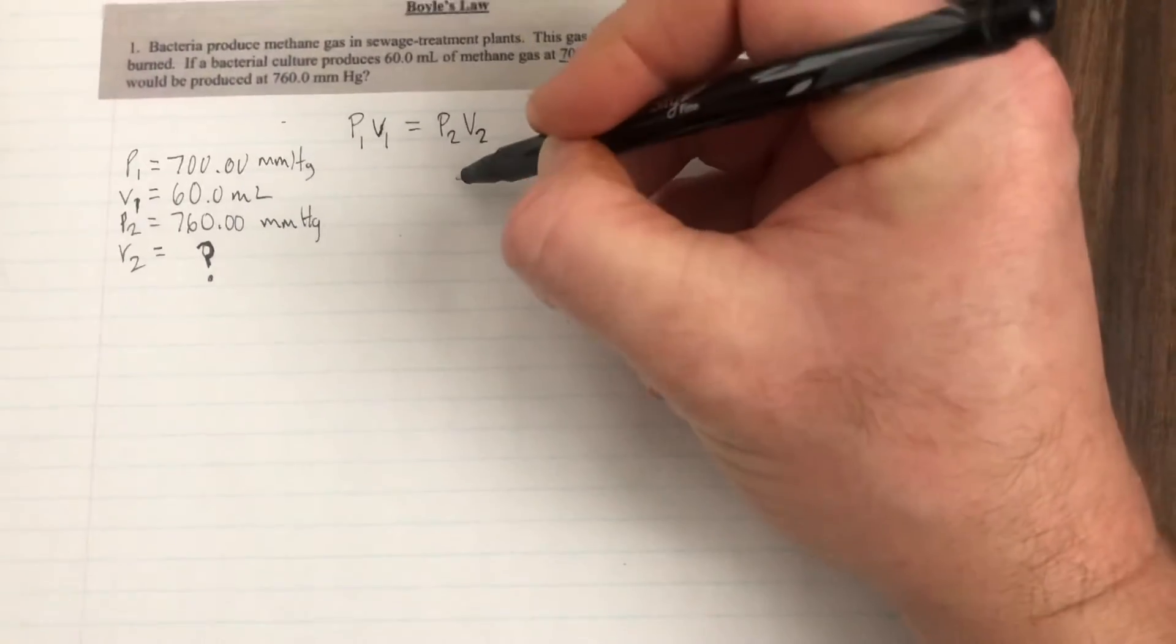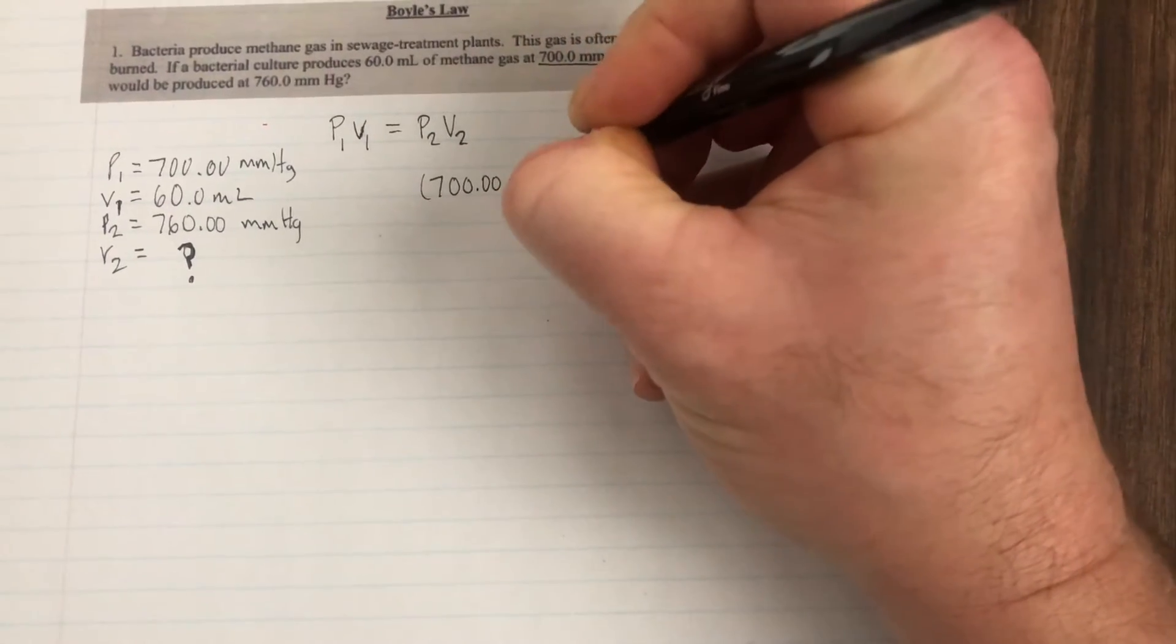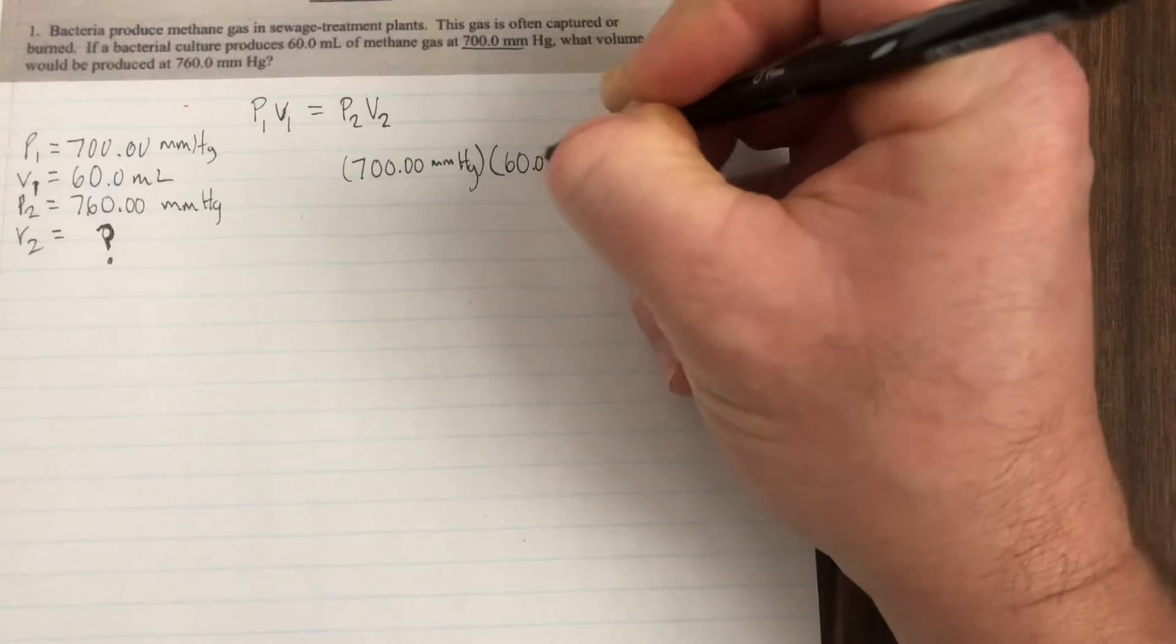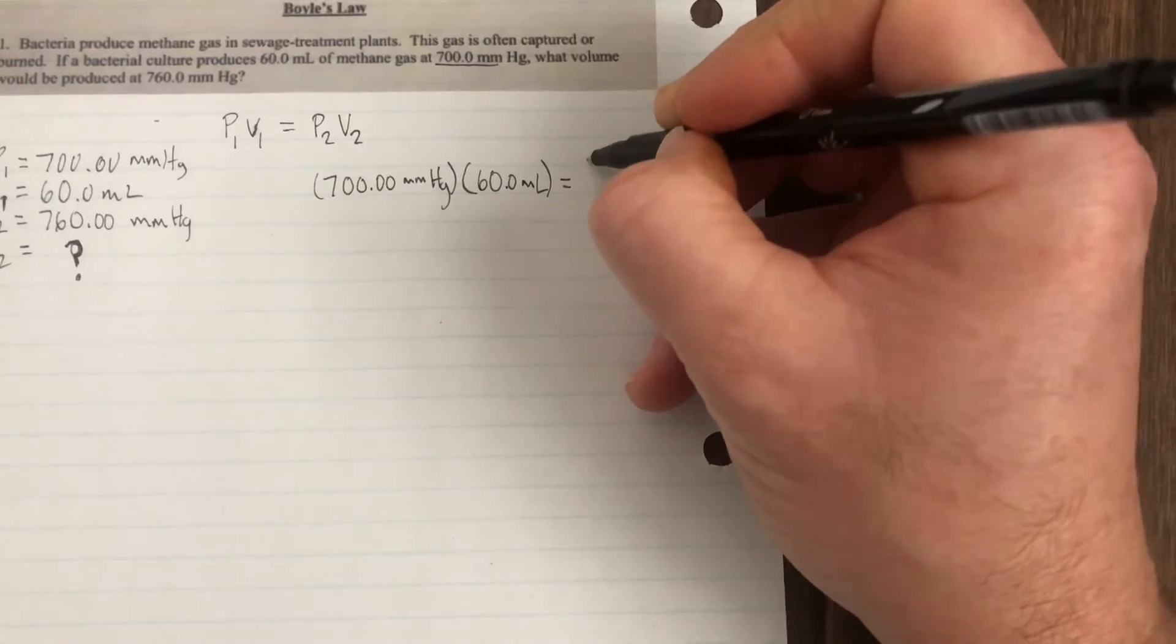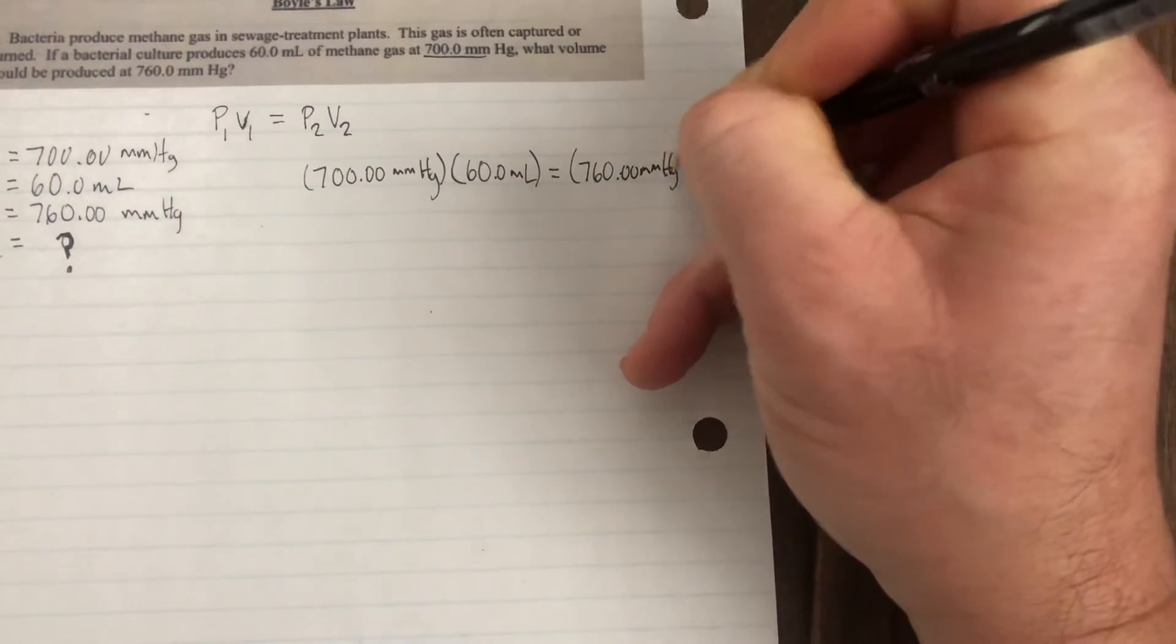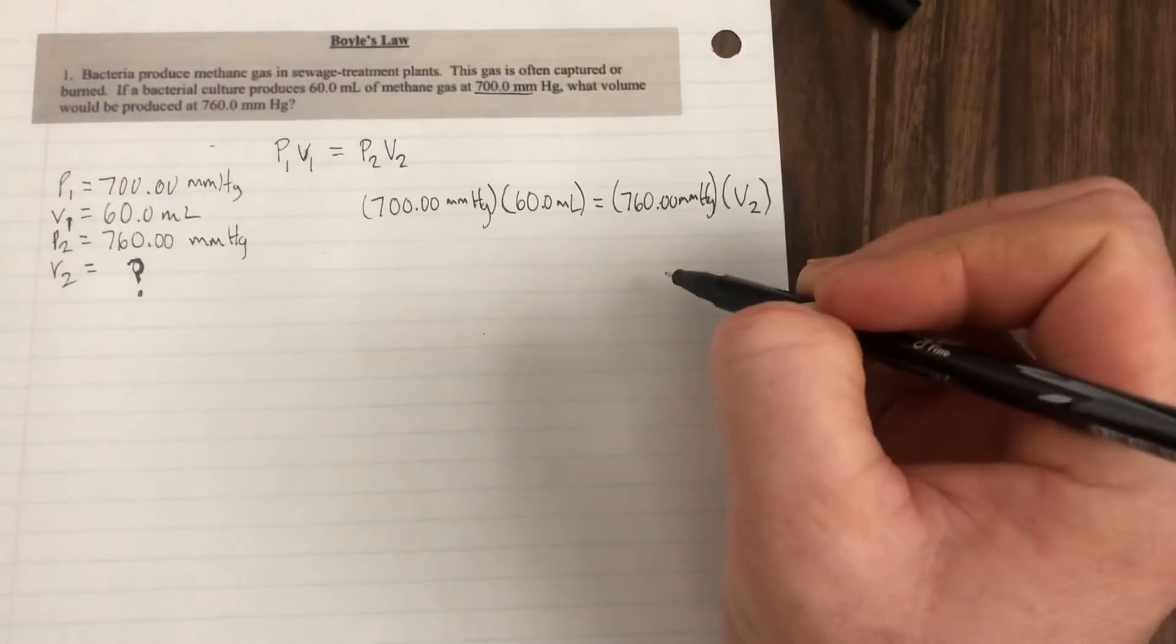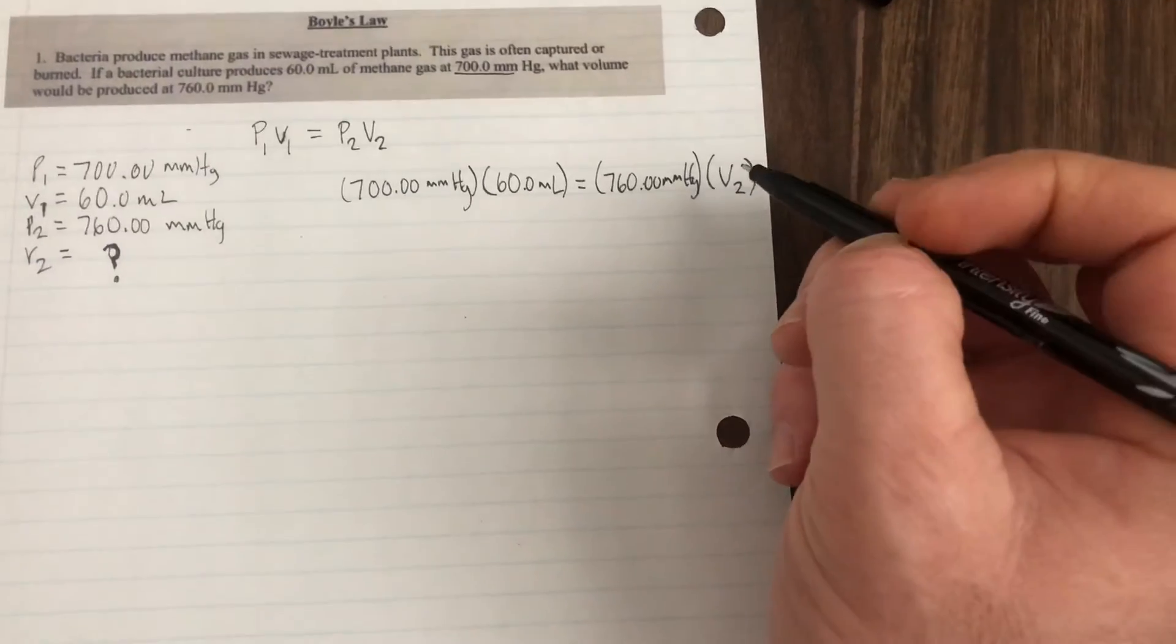So what I'm going to do is I'm going to plug into my formula, the first pressure and the first volume and the new pressure, which is 760 millimeters of mercury. And we're going to solve for the new volume. So this is kind of a choice at this point. Like you can rearrange prior to subbing in or you can sub in like I have and then rearrange. I prefer to do it this way.